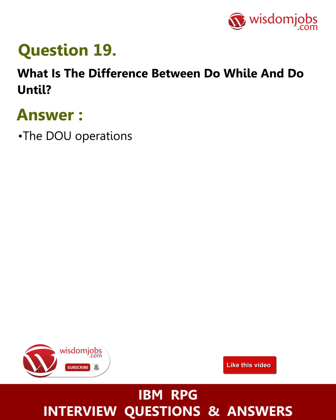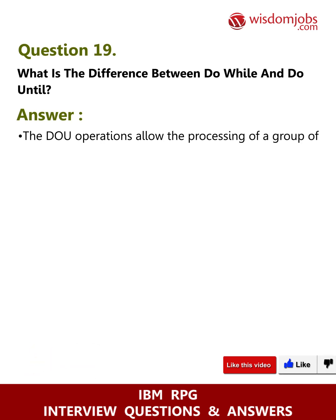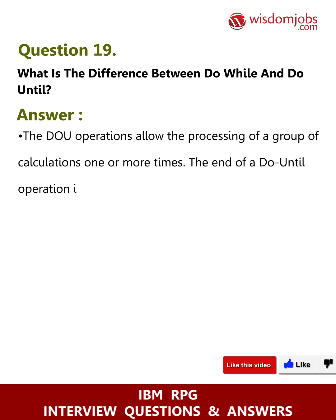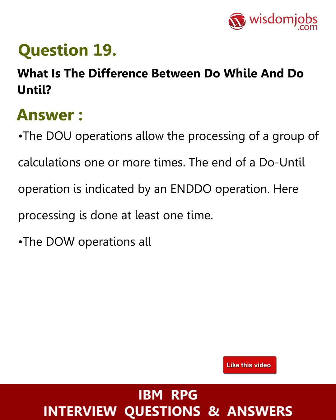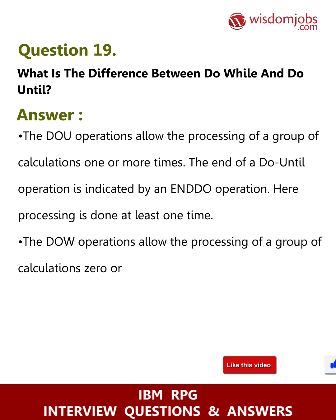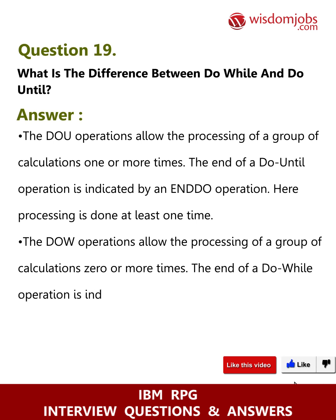Question 19: What is the difference between DO WHILE and DO UNTIL? Answer: The DOW operations allow the processing of a group of calculations zero or more times. The DO UNTIL operations allow the processing of a group of calculations one or more times — processing is done at least one time. The end of both is indicated by an END DO operation.